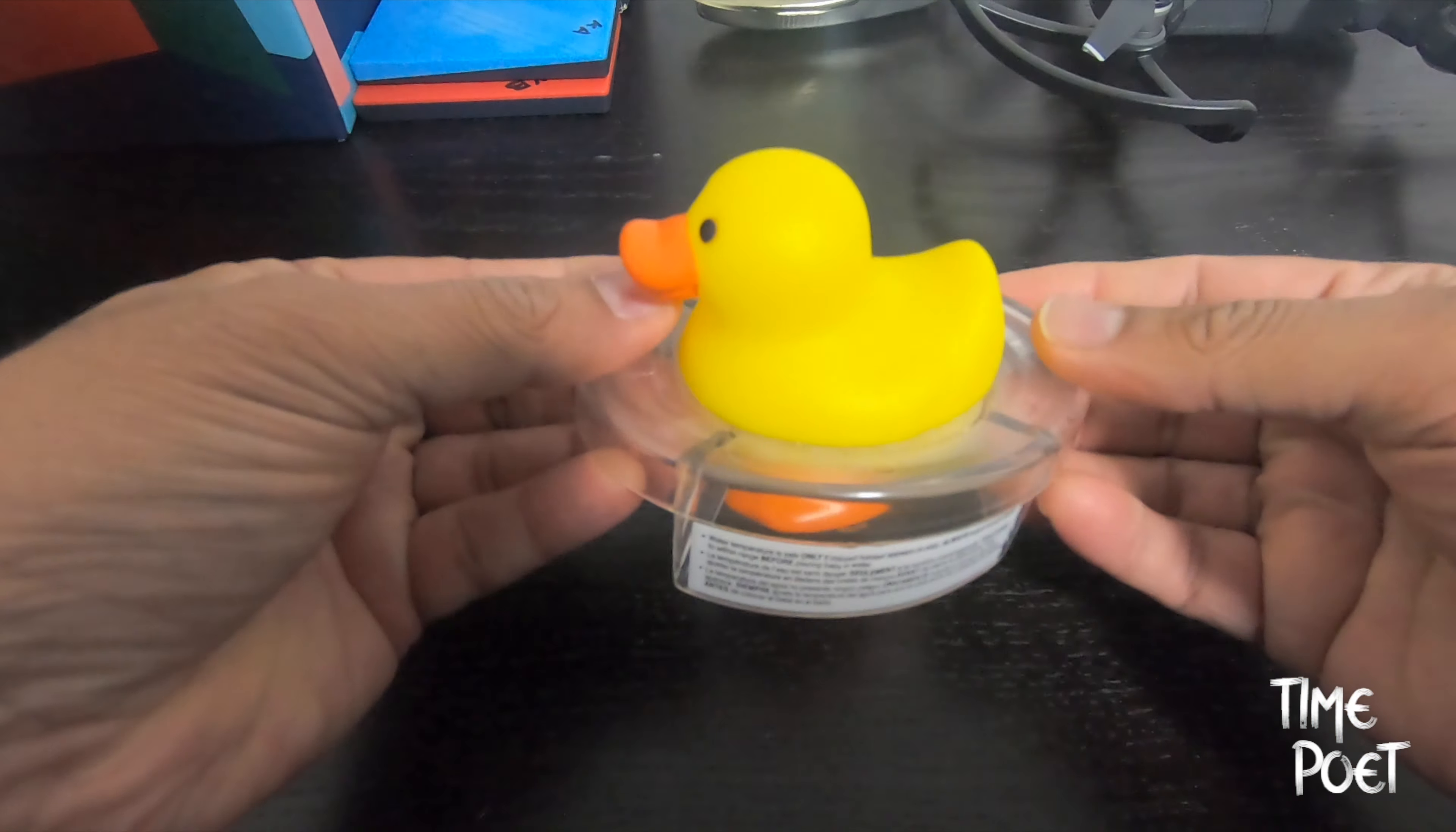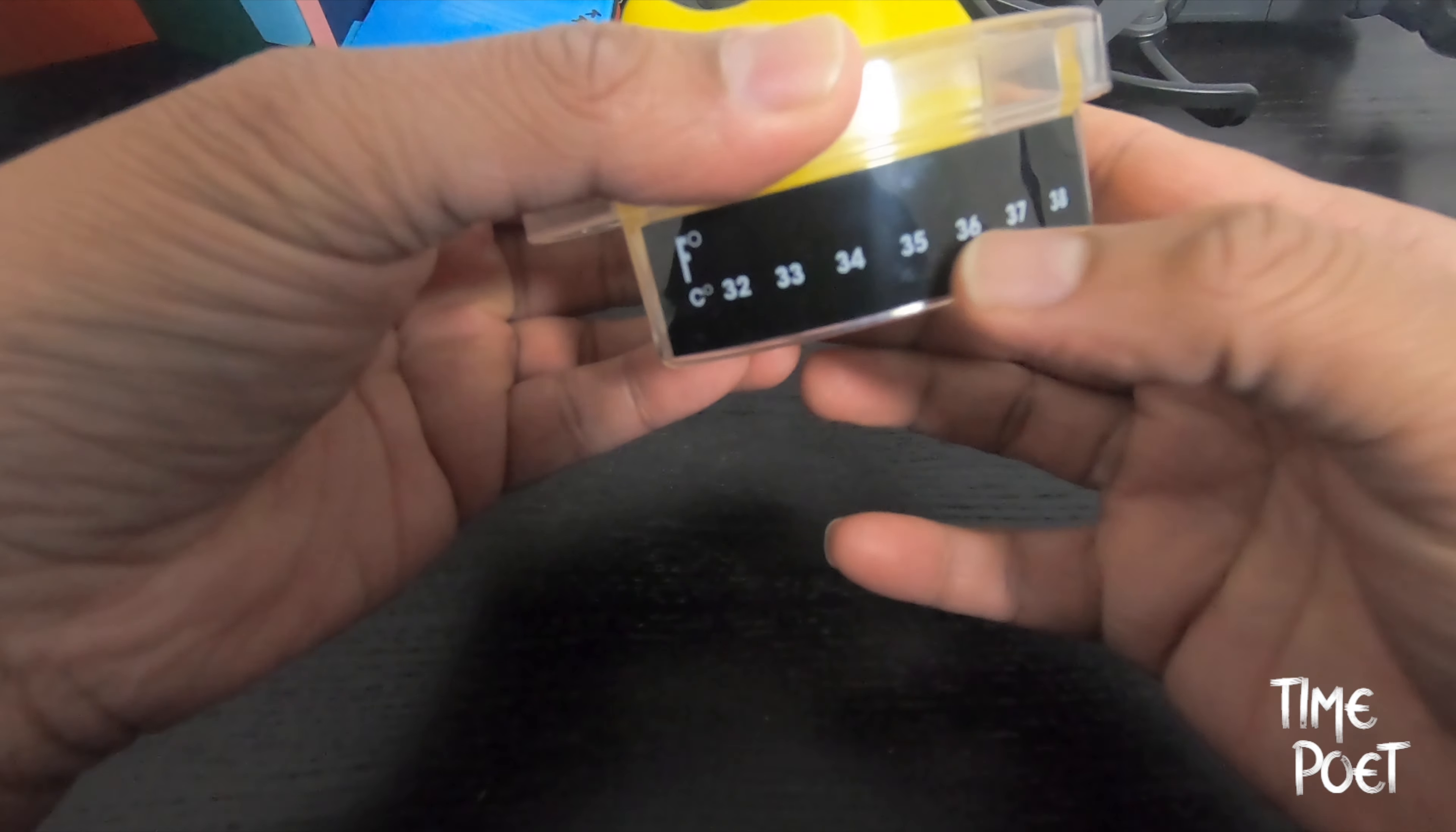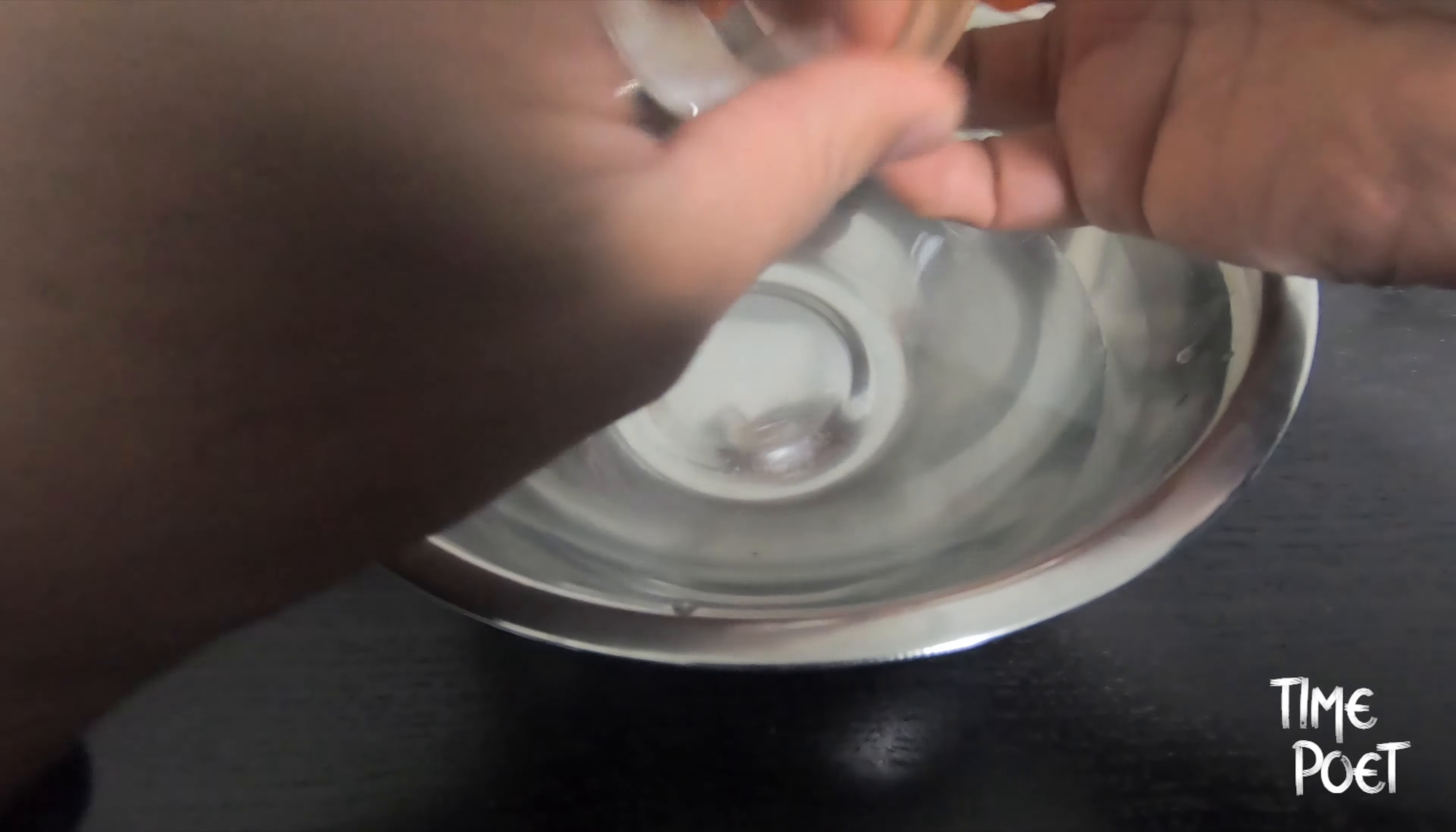It's a rubber duck thermometer which shows you the temperature of water especially when you are bathing babies. As you can see, the rubber duck has got a base and it's got a thermometer on its side, and this 3.5 dollar toy is really very handy when it comes to giving a bath to your babies.